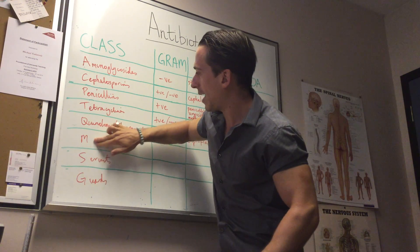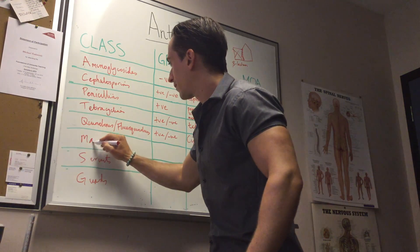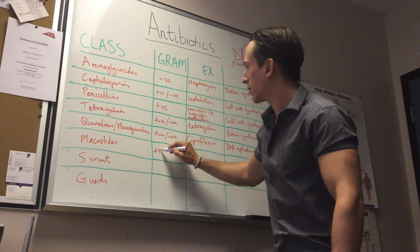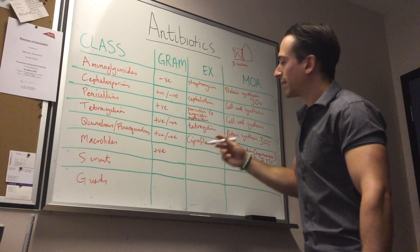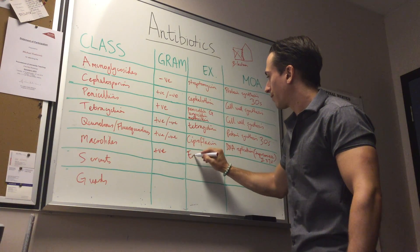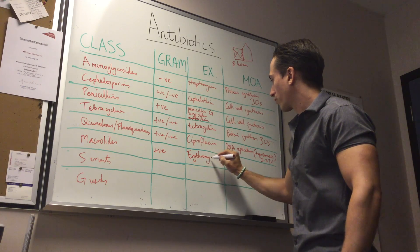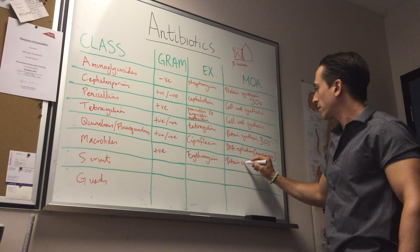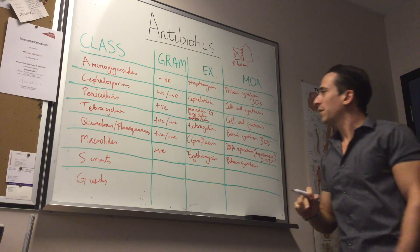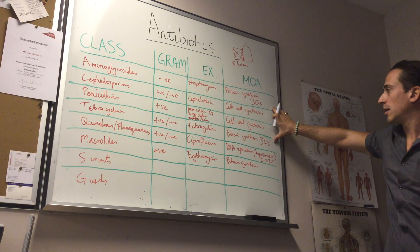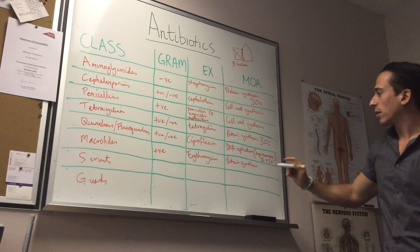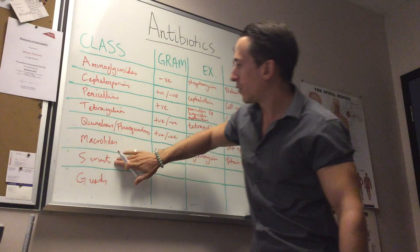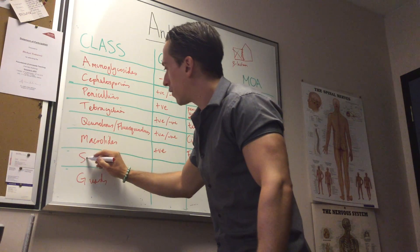'M' represents the macrolides. Macrolides predominantly affect gram-positive bacteria, and an example is erythromycin. Their mechanism of action is inhibition of protein synthesis, but unlike tetracyclines and aminoglycosides which target the 30S subunit, macrolides inhibit the 50S ribosomal subunit.